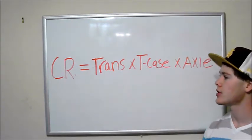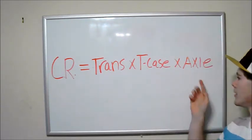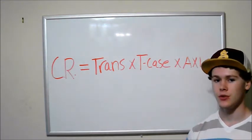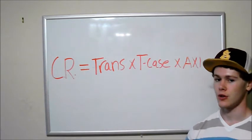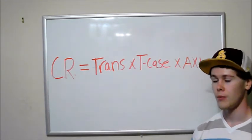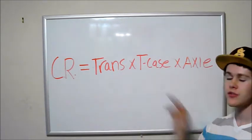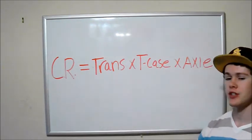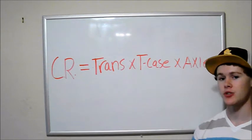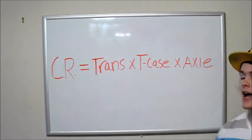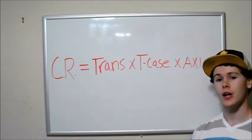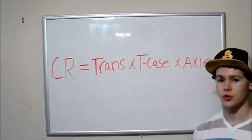So another way you can adjust your crawl ratio other than your axle is by doing two transfer cases. Now what this allows you to do is when you're driving on the street, your ratios aren't changed at all. But if I were to drop both transfer cases in low, now I have my transmission times my transfer case ratio times my second transfer case ratio times my axle. So what that allows you to do is it allows you to really get a high crawl ratio without affecting your normal driving.